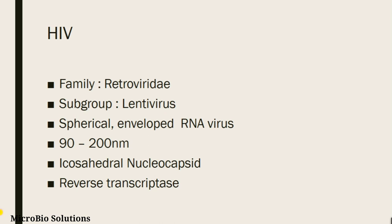These are the basic salient features of HIV. It belongs to the family Retroviridae under the subgroup Lentivirus and it is spherical in nature. It is an enveloped RNA virus because of the genetic material, and it measures about 90 to 200 nanometers and has an icosahedral nucleocapsid. It also has the reverse transcriptase enzyme which is seen attached to the genetic material, that is RNA.